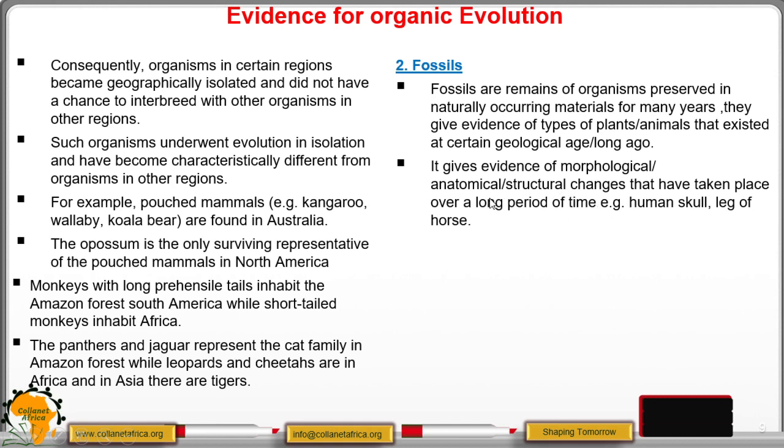So these morphological or anatomical structures are the changes in the body form. For example, the human skull. There are differences between the skull of the past ape and the modern man. So those are the structural changes we are talking about. And fossils give evidence of the differences.